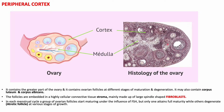The outer cortex forms the maximum part of the ovary and contains ovarian follicles in different stages of maturation and degeneration. It also consists of the corpus luteum and the corpus albicans. These follicles are embedded in a highly cellular connective tissue stroma mainly made up of large spindle-shaped fibroblast cells. In each menstrual cycle, a group of follicles starts maturing under the influence of follicle-stimulating hormone, but only one attains full maturity while others degenerate into atretic follicles.